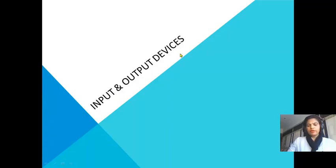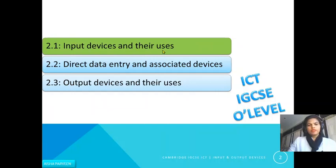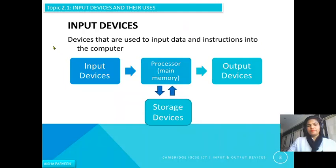Hello students, we are going to start our next topic: input and output devices. In this chapter we have further sub-topics: input devices and their uses, direct data entry and associated devices, and output devices and their uses. In this video we will discuss input devices and their uses. Input devices are the devices used to input data and instructions into the computer. We need input devices to give instructions to the computer, a processor to do processing, output devices to get the result, and storage devices to store our data.